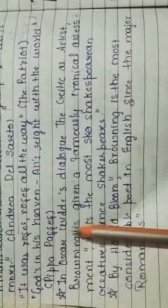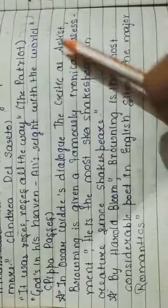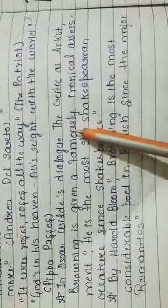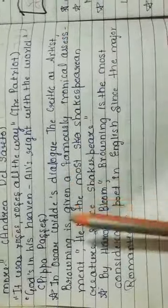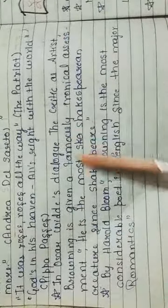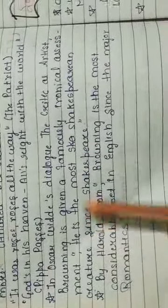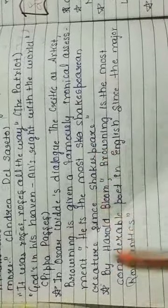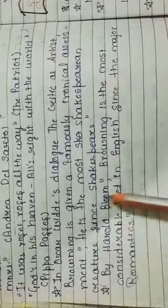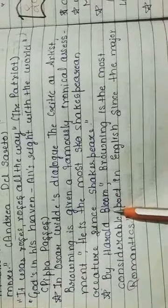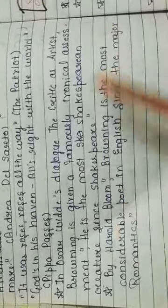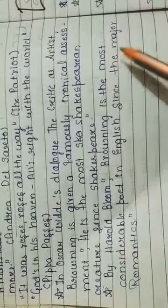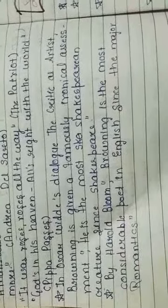In Oscar Wilde's dialogue The Critic as Artist, Browning is given a famously ironical assessment. Oscar Wilde said about him: 'He is the most Shakespearean creature since Shakespeare.' Harold Bloom said about Robert Browning: 'Browning is the most considerable poet in English since the major Romantics.' Thank you.